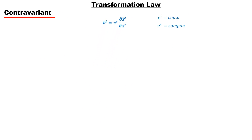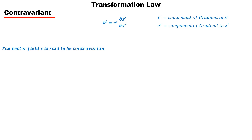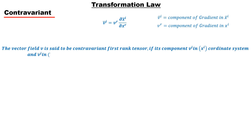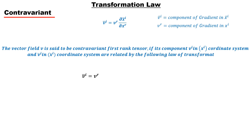This represents the conversion of velocity components from one coordinate system to another. In general, if v is a rank-1 contravariant tensor with component v-super-i in x-super-i coordinate and v-bar-super-i in x-bar-super-i coordinate, then the transformation rule in both coordinate systems is given by this law.